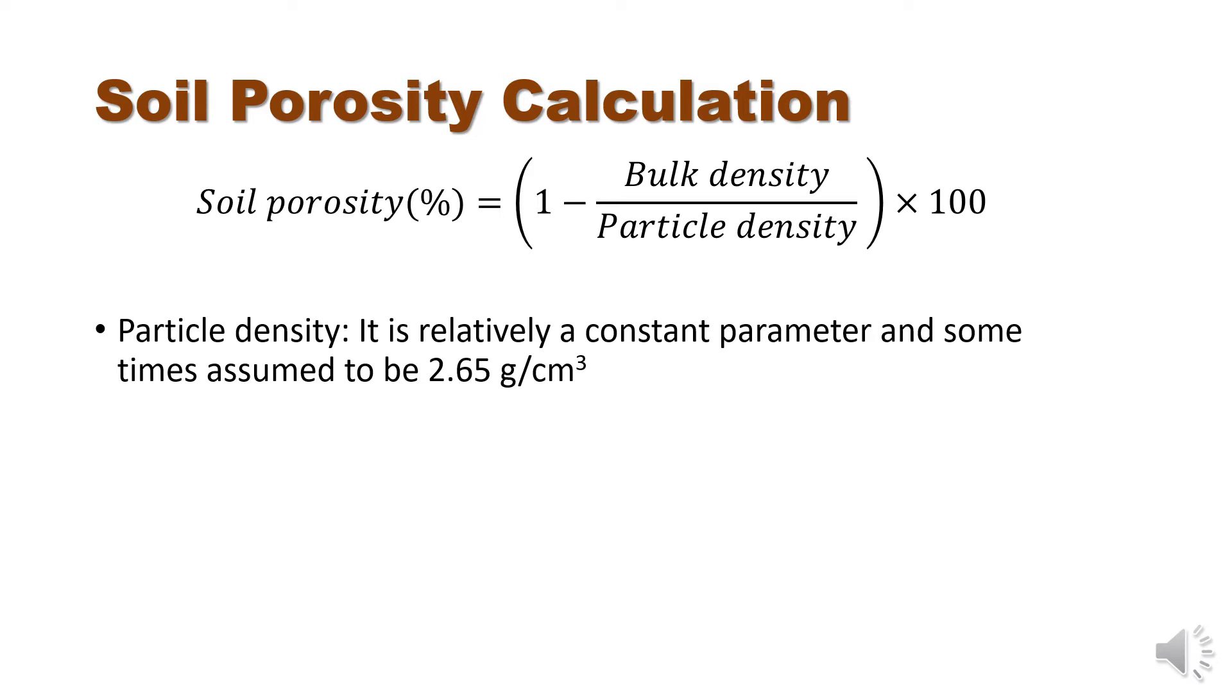Particle density is a relatively constant parameter and is sometimes assumed to be 2.65 grams per centimeter cubed.